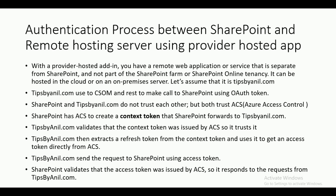SharePoint validates the token and responds to tipsyannil.com. To summarize the authentication process at a high level: once a user clicks on the app, a context token is sent to the remote hosting server; the remote server validates that token because it was created by ACS; the remote server then generates an access token and sends a request to SharePoint; SharePoint again validates that access token created by ACS, and if valid, SharePoint sends the response back to the remote hosting server.